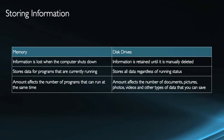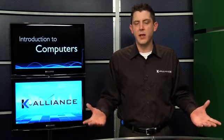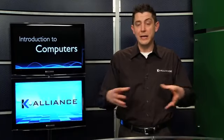Memory's purpose is to store data for programs that are running. A drive's purpose is to store all data regardless of whether or not the program is running — it's just there as a permanent means of storage. So when we're talking about what kind of effect it's going to have, the more memory that you have allows you to run more programs at a single time. The accurate statement is: my computer's going really slow, I need more memory. If you're having trouble downloading something and saving something, then you need more hard drive space. Disk drive space is going to affect the number of documents, pictures, videos, and other types of data that you can save, not the number of programs that can be running and the overall speed of the computer.